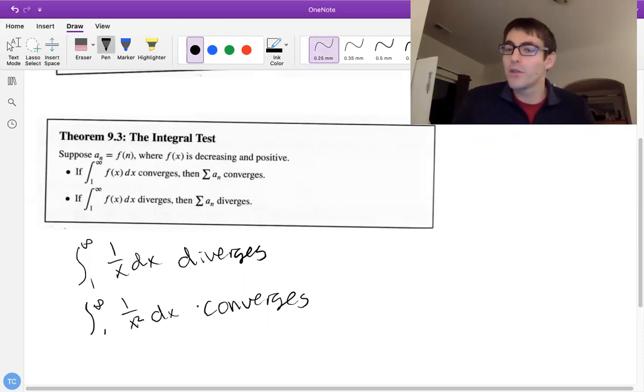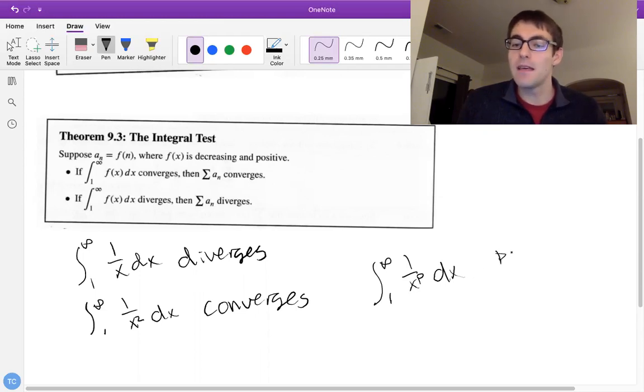So when we were doing this, we determined that as long as this exponent here is bigger than 1, if p is bigger than 1, this diverges, oh excuse me, if p is bigger than 1, this converges. Whereas if p is less than or equal to 1, it diverges.